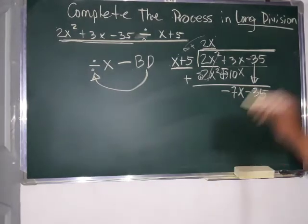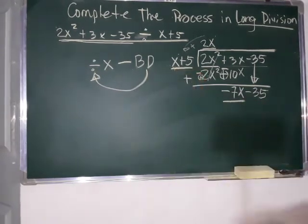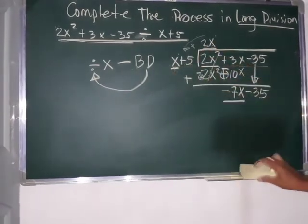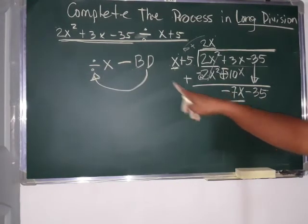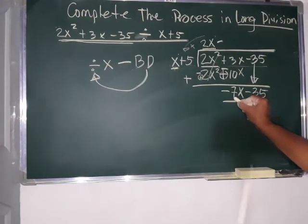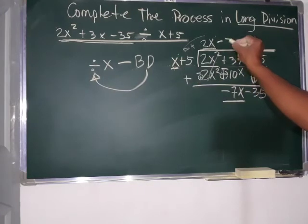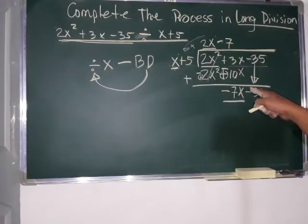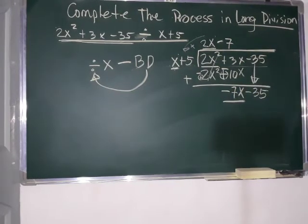Okay. So, review. Pag magdivide, first term and fourth term. First term. Okay. I'll repeat. First term and first term. So, negative divided by negative. Positive is negative. 7x divided by x. So, 7 divided by 1. 7. x divided by x. So, meaning to say, 1 minus 1, 0 na siya. So, negative 7 na lang.